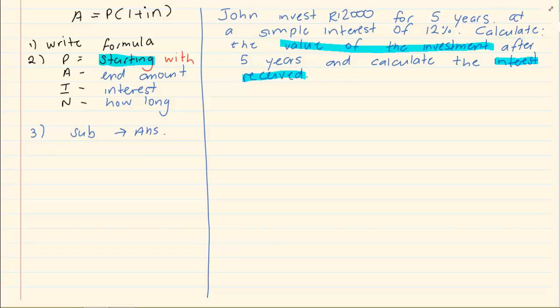Now that is important because it is two different parts to be answered or two different questions in one complex question. When we start, number one, we know we are going to use simple interest. Because they tell us in the question, John invests R12,000 for five years at a simple interest.